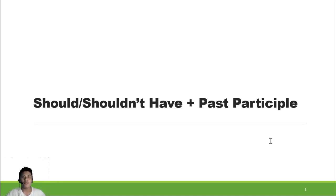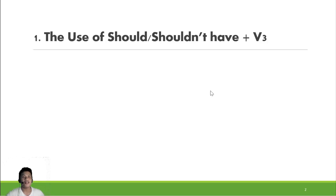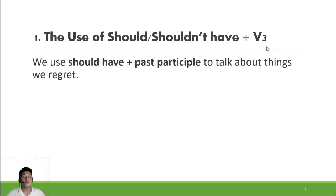Hello everyone, welcome back to my English class. Today's lesson is about 'should' and 'shouldn't have' plus past participle. Let's get started. We use 'should have' plus past participle or 'shouldn't have' plus past participle.